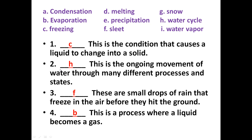Question number two: this is the ongoing movement of water through many different processes and states. We all know this is the water cycle. During the water cycle, water moves from the earth's surface to the atmosphere, and there are many different processes: evaporation, condensation, and precipitation. The answer for number two is H — water cycle.